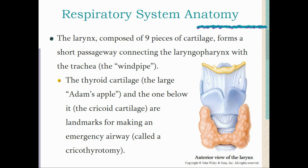Just like a guitar, where thicker strings produce lower notes, larger vocal folds produce a man's deeper voice. A man's Adam's apple or larynx is especially prominent in someone with a thin neck. Also, the hyoid bone — which we learned in the skeletal system — provides the top edge framework for the larynx. Below the thyroid cartilage is the cricoid cartilage, and together they are landmarks for an emergency airway procedure called a cricothyrotomy.